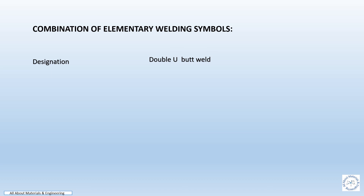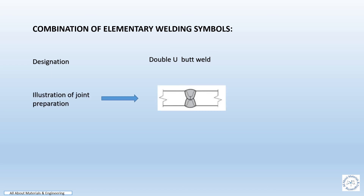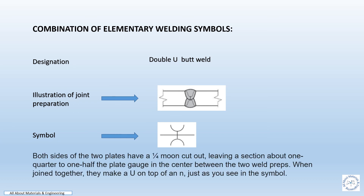Combination of elementary weld symbols for double U butt weld. The sketch represents the illustration of joint preparation and the symbols to be incorporated in the drawing. Both sides of the two plates have a one-quarter moon cut, leaving a section about one quarter to one half of the plate gauge in the center between the two weld edge preparations. When joined together, they have a U on the top and an inverted U on the bottom, just as in the symbol.